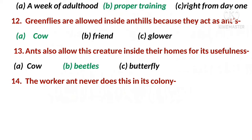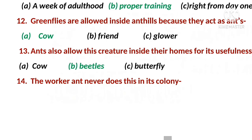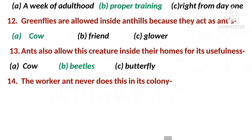MCQ 12: Greenflies are allowed inside anthills because they act as ants' - the right option is A - cow. MCQ 13: Ants also allow this creature inside their homes for its usefulness - the right option is B - beetles.